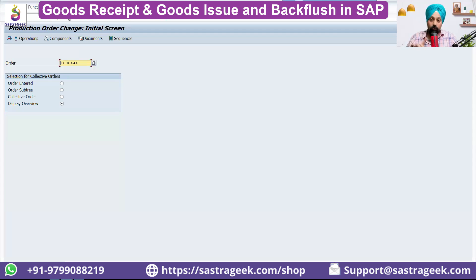So you can issue the material manually, or you can also issue the material automatically. You will just do one transaction, order confirmation, and all the material will get issued to the production order automatically.